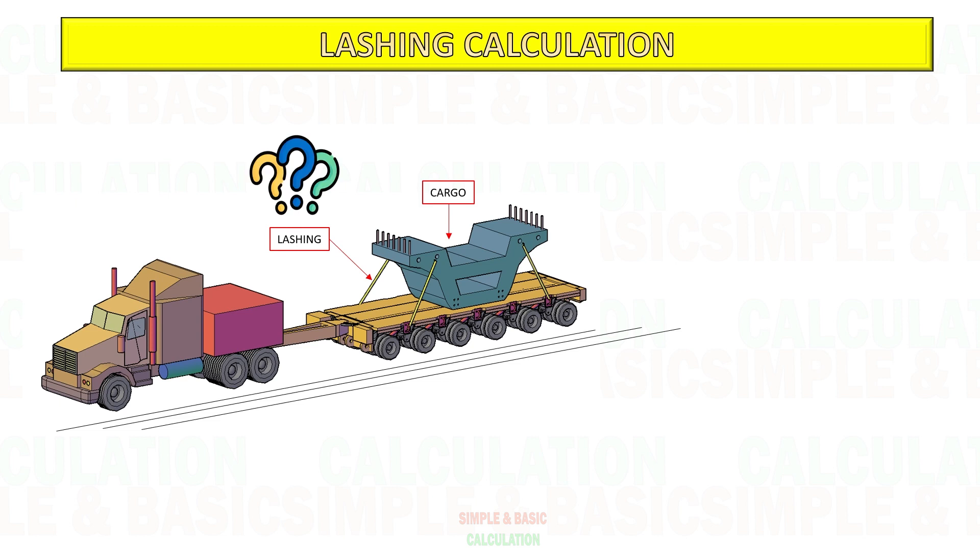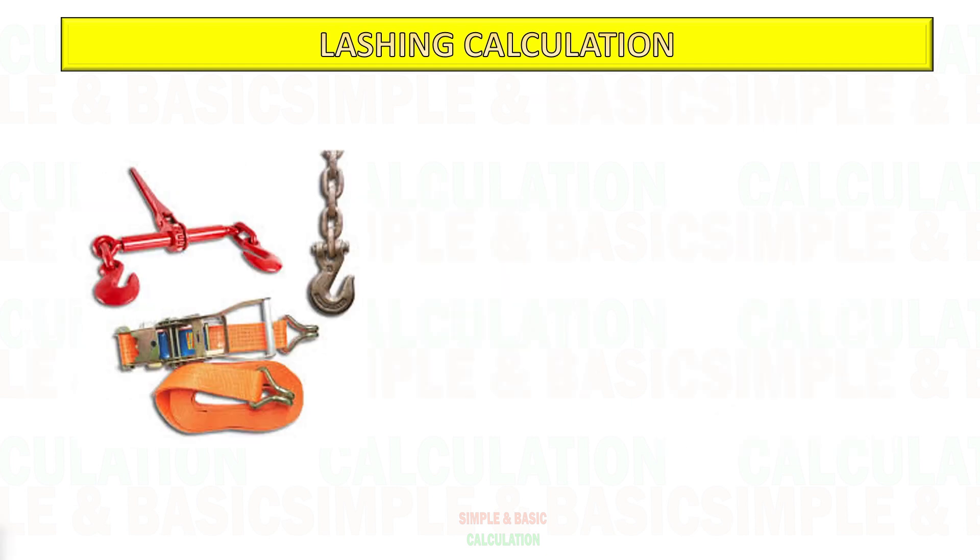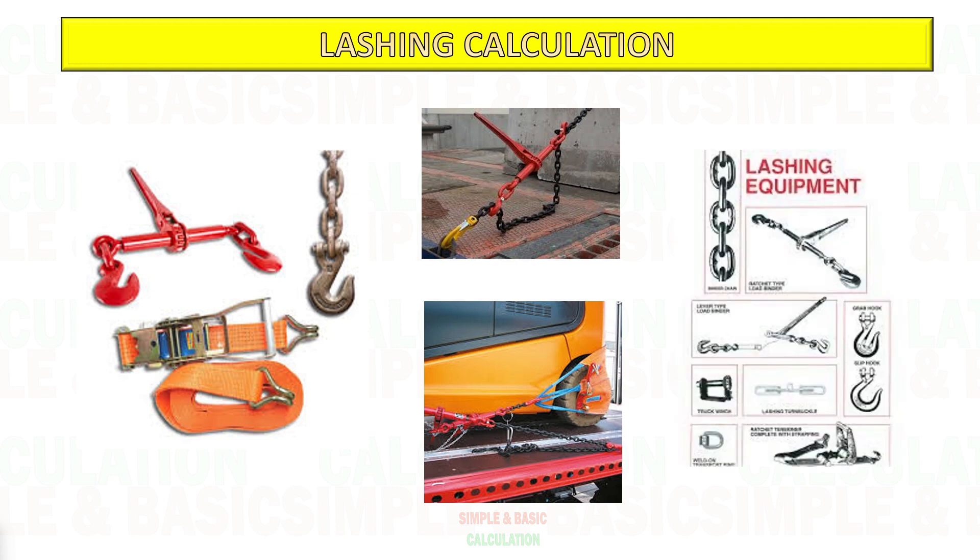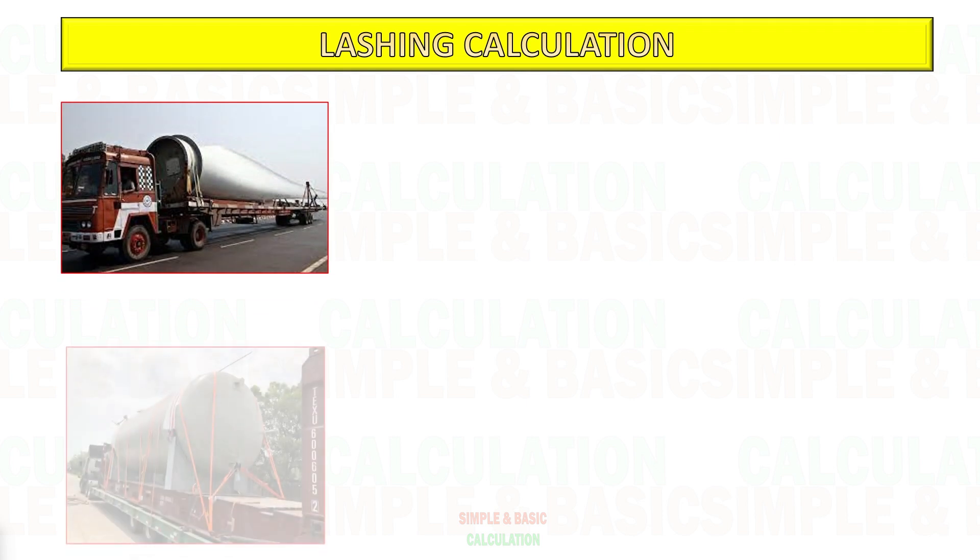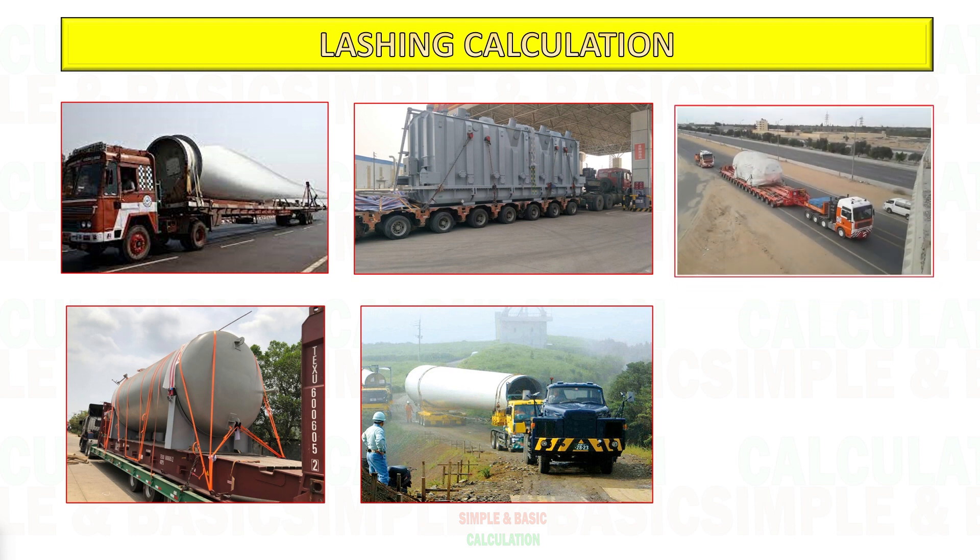Lashing is the process of securing cargo for transport with the aim of minimizing movement during transit. Ropes, cables, wires, and strapping are utilized for securing cargo. To reduce sliding and tipping forces, adequate cargo restraint measures must be used, and the driver must be able to secure the lashings during transit.